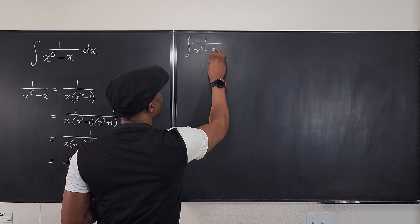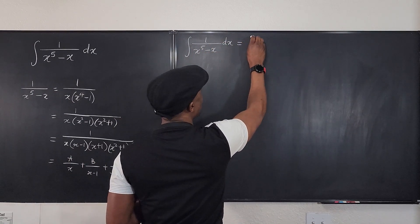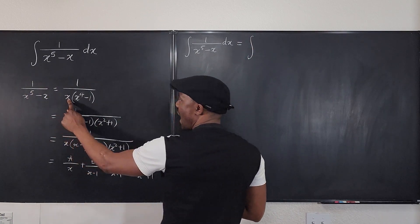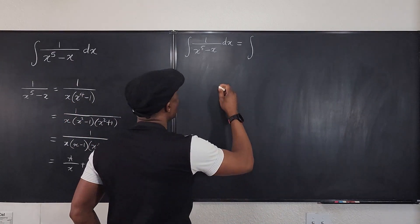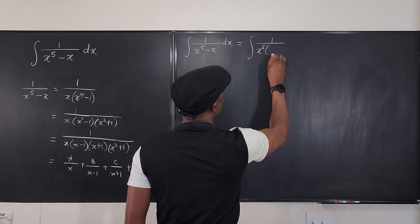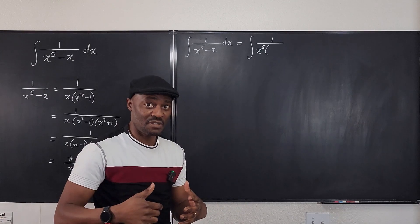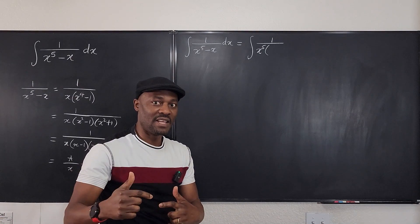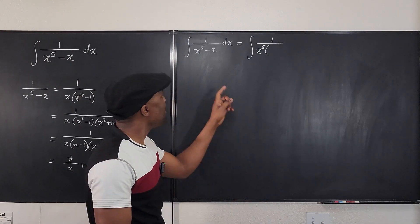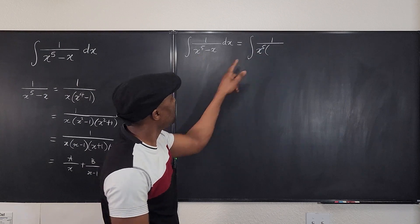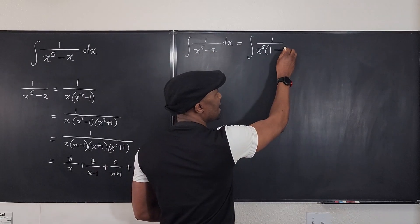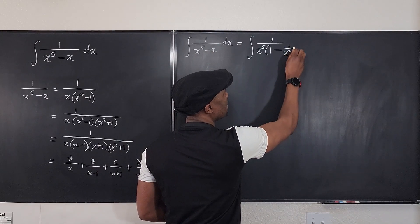What if we write the integral of 1 over x to the 5th minus x — instead of factoring out x, we factor out the bigger term, which is x to the fifth? So this is going to be 1 over x to the fifth. Now if we factor out x to the fifth, remember that factoring means you are dividing. If you divide what's inside by x to the fifth, you get 1, and if you divide x by x to the fifth you get 1 over x to the fourth.